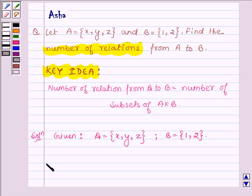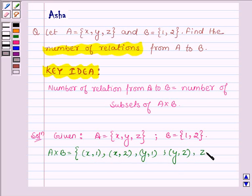Now we are required to find the number of relations from A to B and we know that the relation from A to B is a subset of A cross B. A cross B is equal to the ordered pairs X1, X2, Y1, Y2, Z1, and Z2.